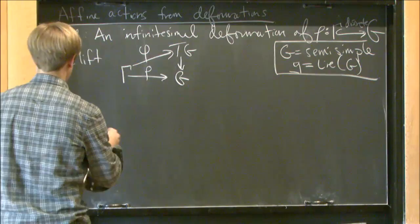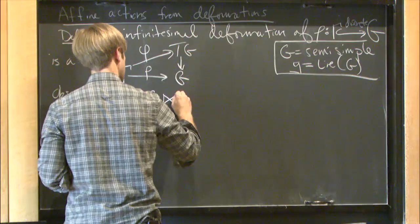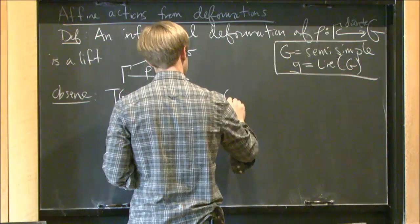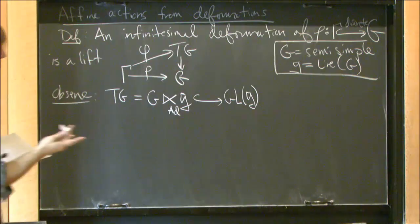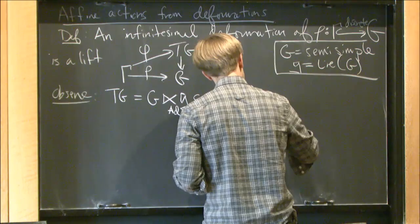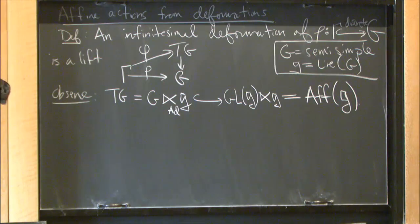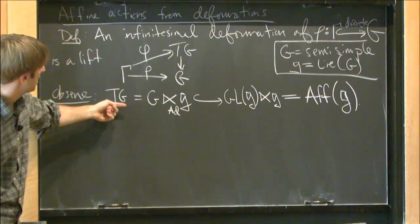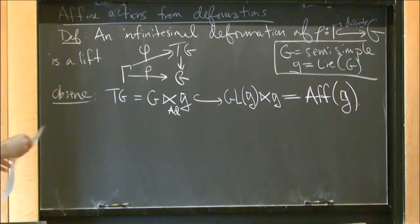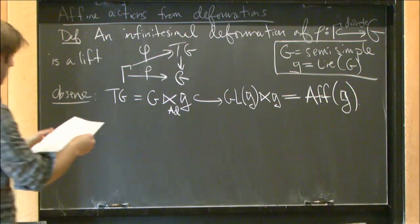The tangent bundle of G is the direct product of G with its Lie algebra, twisted by the adjoint action. It's naturally a subgroup of GL(g) semi-direct with g — the affine group of the Lie algebra. So we can think of the tangent bundle of G as giving us affine transformations on the Lie algebra, thought of as a copy of R^n. An infinitesimal deformation phi decomposes as the discrete embedding rho and a cocycle U: gamma → g, which is a rho-cocycle (a twisted homomorphism), recording all the tangent vectors translated back to the identity.